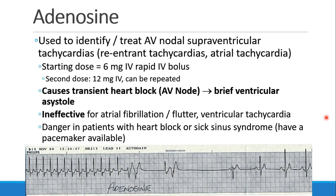We use adenosine for a few different things. First, if someone is in some sort of a tachyarrhythmia, you could use adenosine to identify it — you get rid of conduction through the node and can see what's happening just in the atria. We can also use it to treat supraventricular tachycardias like reentrant tachycardias or atrial tachycardia, and it will block the reentrant cycle.